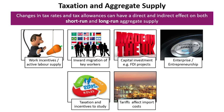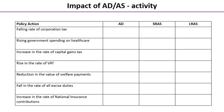Now let's put all of this into practice. Your task is to read the fiscal policy action in the left-hand column and then decide whether it affects AD, short-run aggregate supply, or long-run aggregate supply, taking care to indicate whether it's a rise, a fall, or no change. Pause the video while you do this — you could complete this on a rough piece of paper or on the accompanying downloadable worksheet.